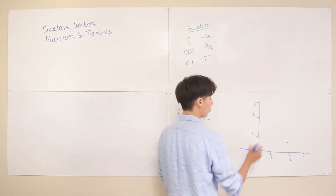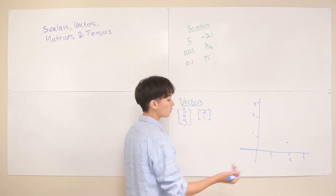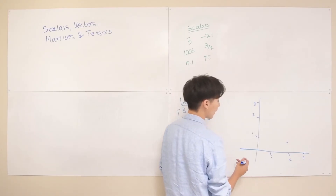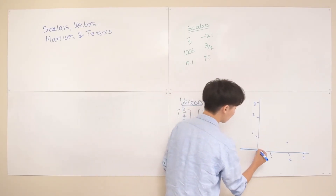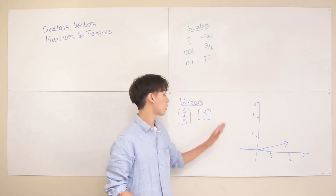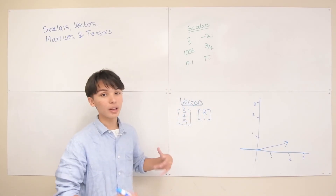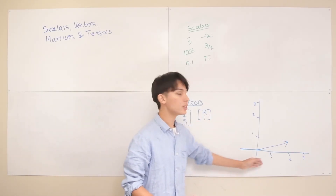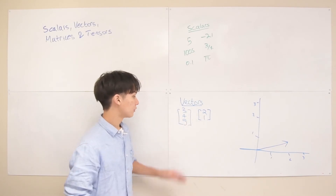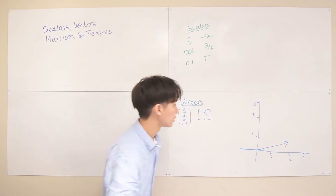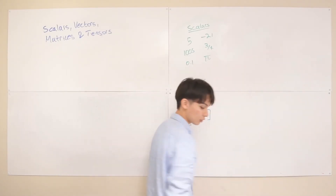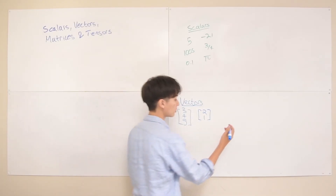That's a geometric understanding of what a vector is — and you can understand why we call it a two-dimensional vector, because it describes something in two-dimensional space. In three-dimensional space, a three-dimensional vector tells you some point in three-dimensional space. So you have your x, y, and z axes, and the vector [3, 4, 5] represents the point at x equals 3, y equals 4, and z equals 5.